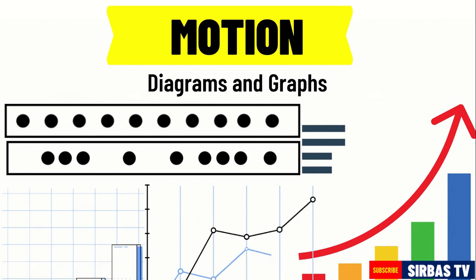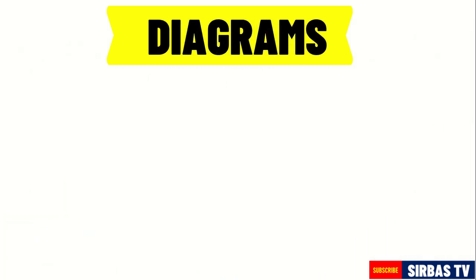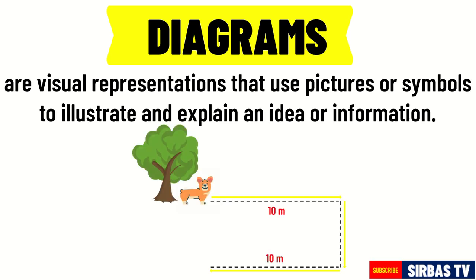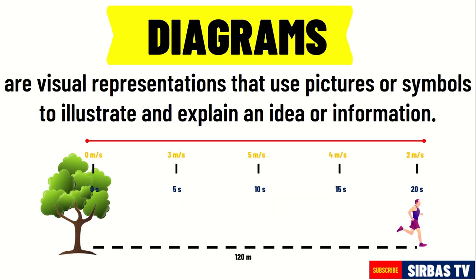Let us first talk about diagrams. Diagrams are visual representations that use pictures or symbols to illustrate and explain an idea or information. In our previous videos, we used diagrams to represent the changing position of the dog and the speed of a runner.